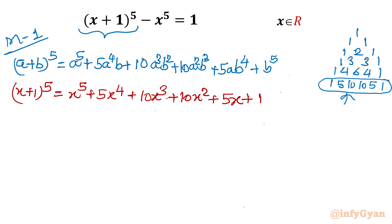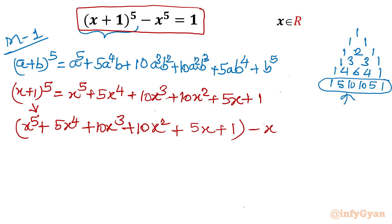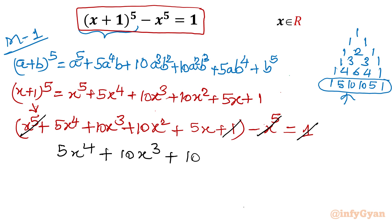Now substituting this expansion into our equation: x^5 + 5x^4 + 10x³ + 10x² + 5x + 1 minus x^5 equals 1. We can cancel x^5 from both sides and cancel the 1 from both sides. What is left is: 5x^4 + 10x³ + 10x² + 5x = 0.